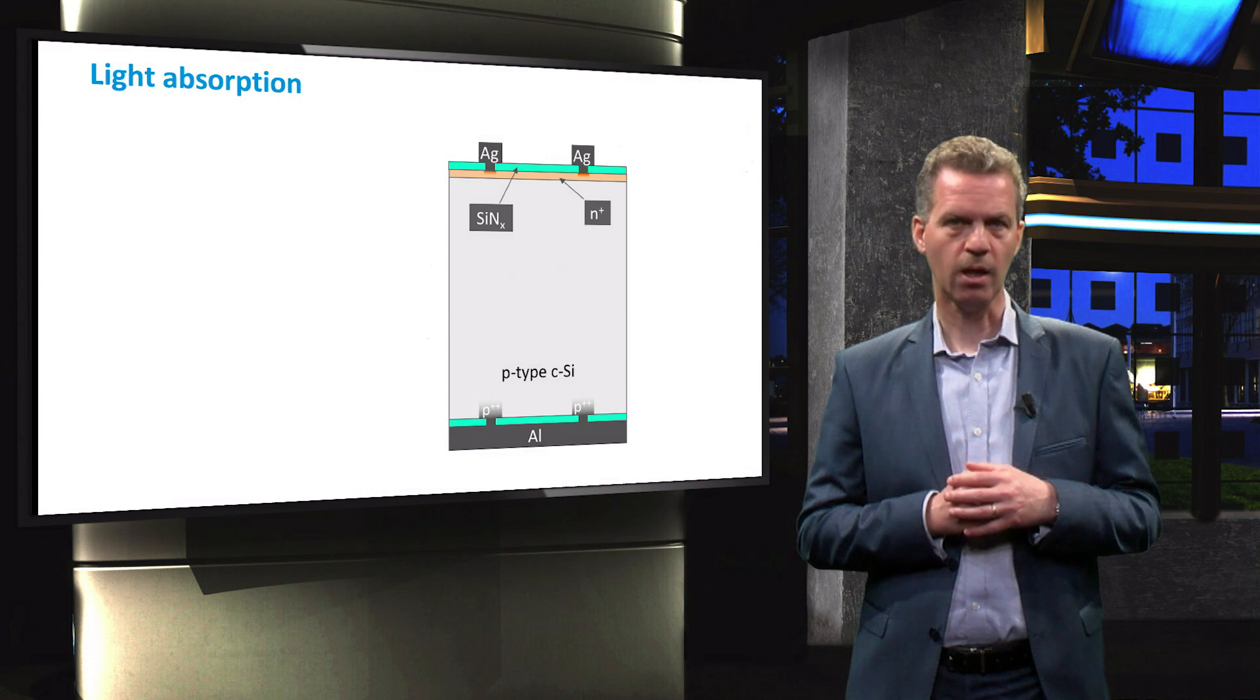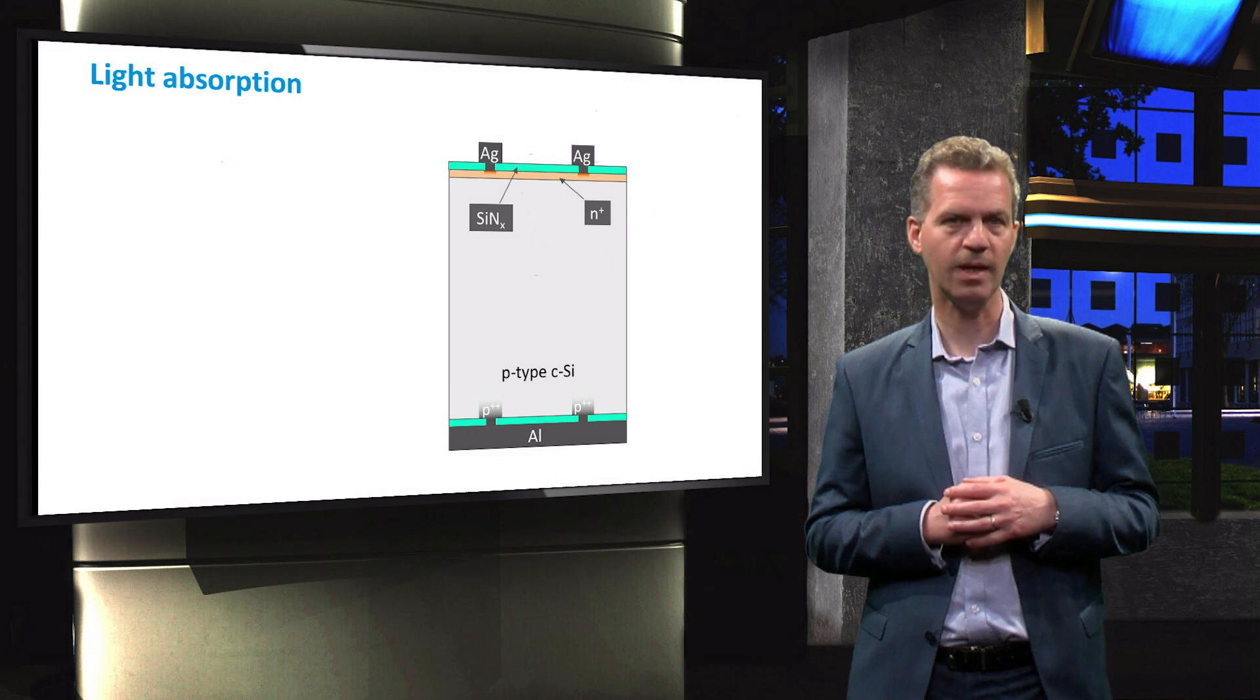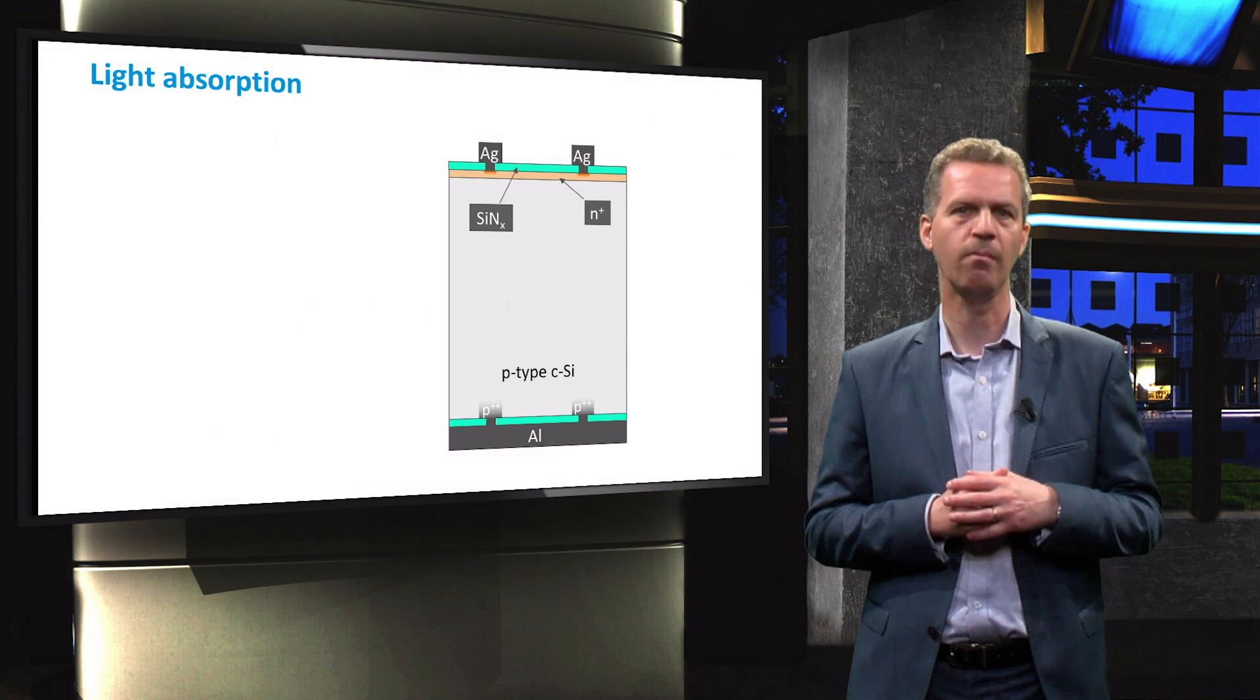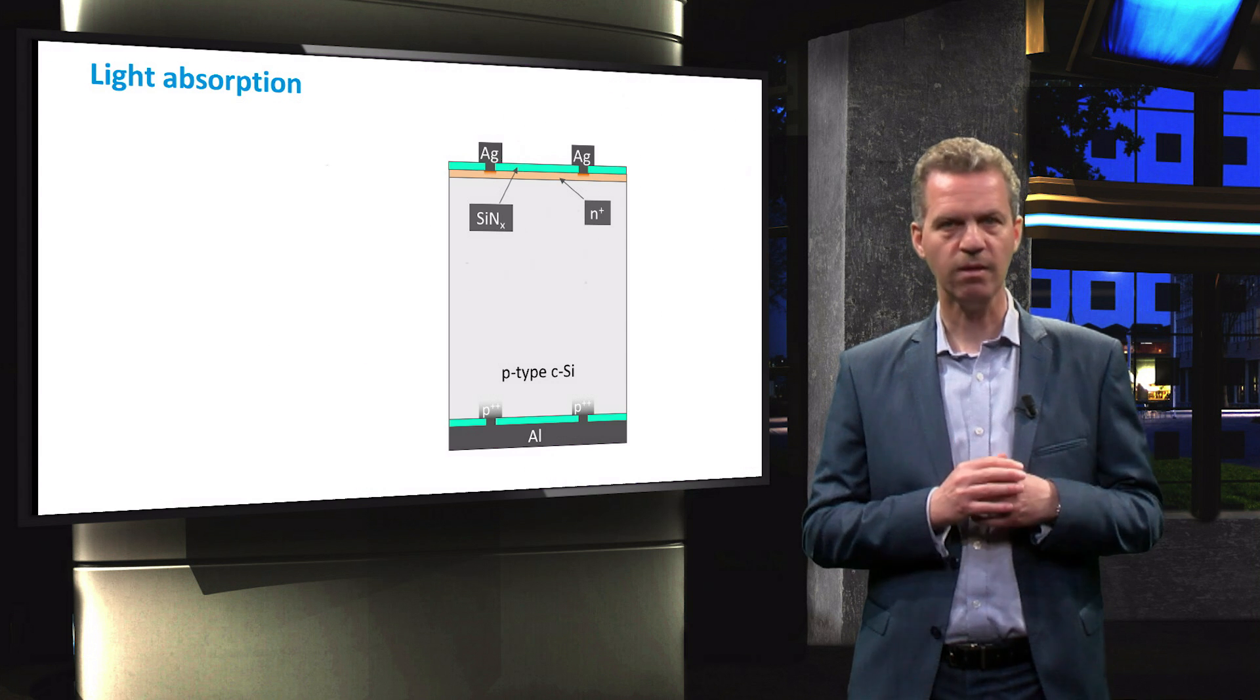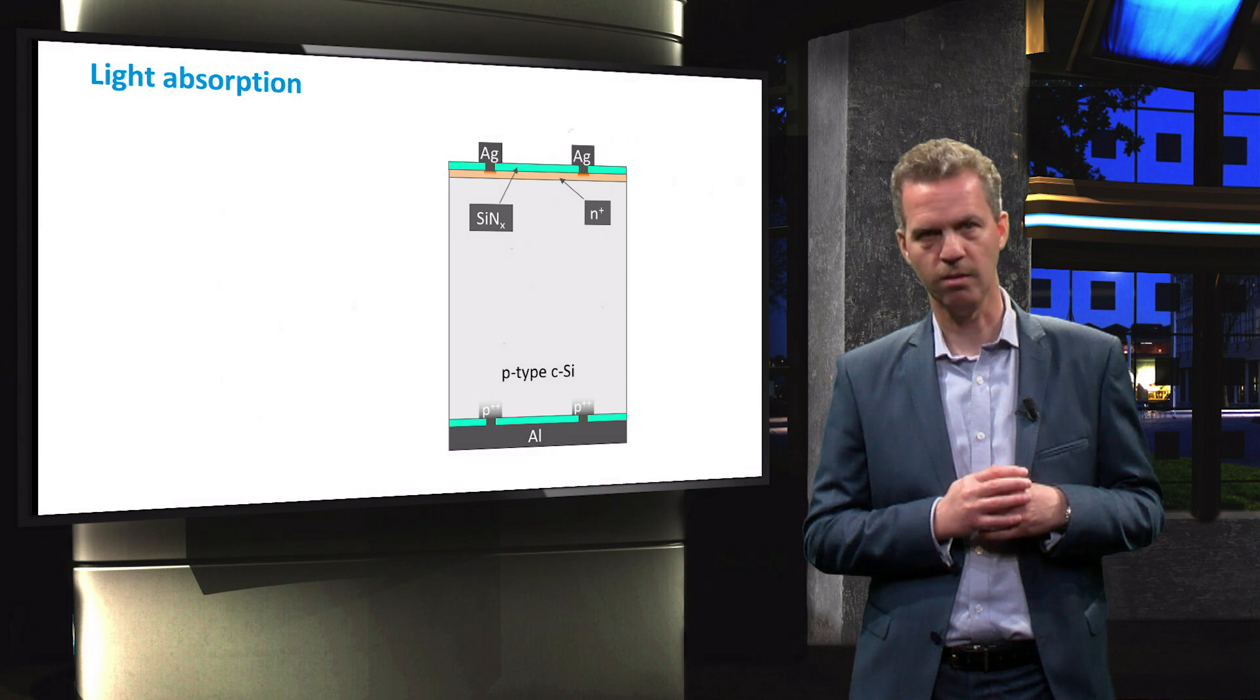This figure shows a cross section of a standard crystalline silicon solar cell that has been passivated at the front and back surfaces, a selective emitter and the back surface field as discussed in previous videos.